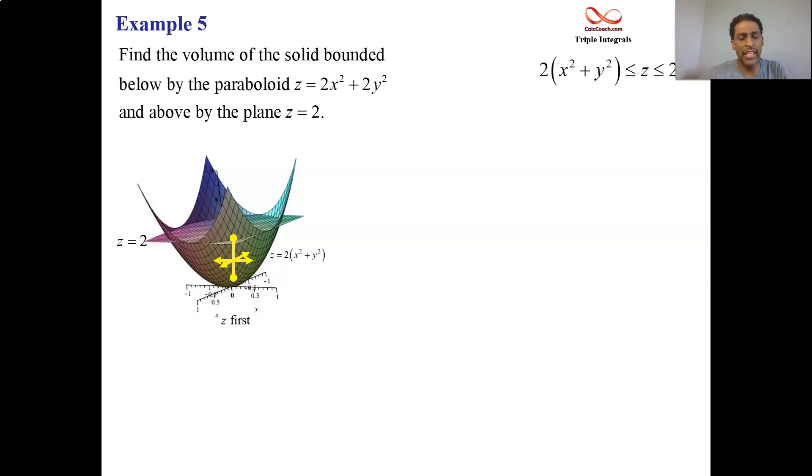Z lives between 2(x² + y²) and 2. The intersection between these two is this circle here, and that is what gets projected down into the xy-plane. Think of it as the shadow. If you shine a light high up on the z-axis, what's in green there is the shadow of our region, the projection of our region. It's a circle.